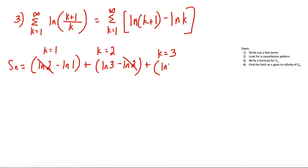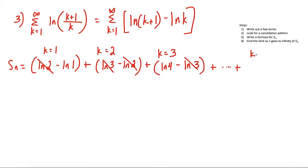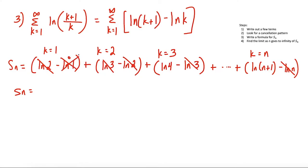Going out to k equals 3, we have natural log of 4 minus natural log of 3. Now we have the first term and the last term canceling again. The pattern is that each new term introduced into the sum: its first part stays and its second part cancels with the previous. Note that natural log of 1 is equal to 0, so that term cancels out entirely.